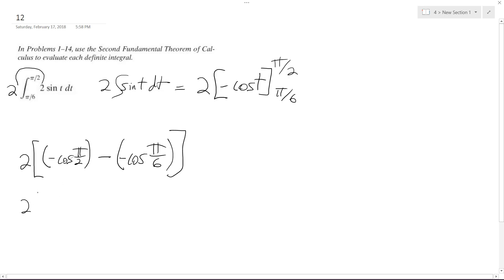So cosine of pi over 2 is 0. And the cosine of pi over 6 is equal to square root of 3 over 2. Square root of 3 over 2.